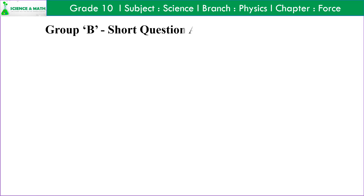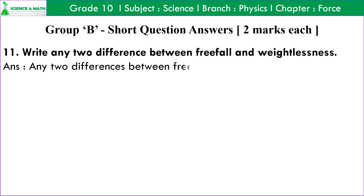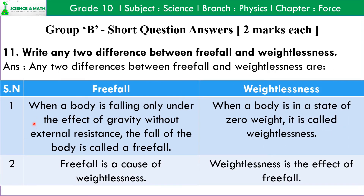Now let us discuss Group B short question answers that are asked of two marks each in SEA. Question number 11: Write any two differences between freefall and weightlessness. Answer: 1. When a body is falling under the effect of gravity without external resistance, the fall of the body is called freefall, whereas when a body is in a state of zero weight it is called weightlessness. 2. Freefall is the cause of weightlessness, whereas weightlessness is the effect of freefall.